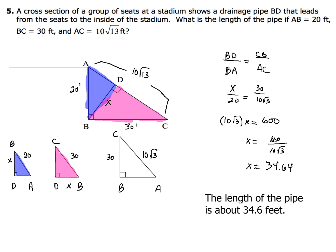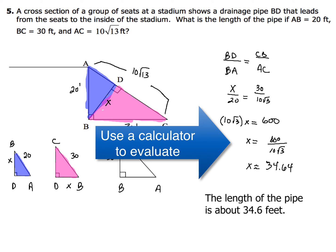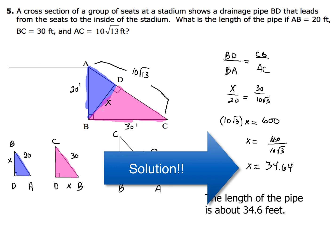And then when you divide on your fifth step, or I'm sorry, your fourth step, you're going to take that number, 600 over 10 square roots of 3. You're going to use a calculator to help evaluate that and simplify that down to about 34.64.